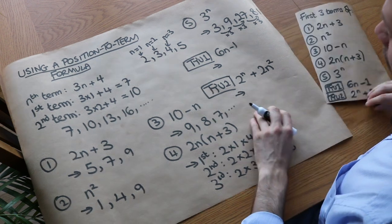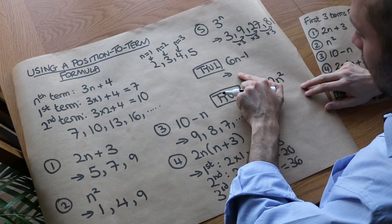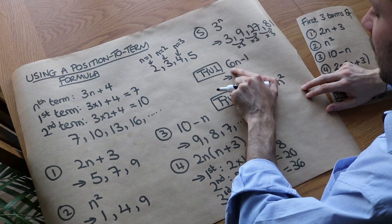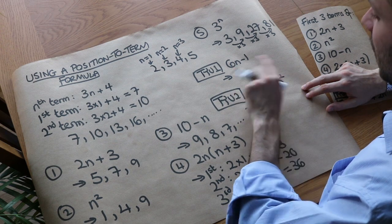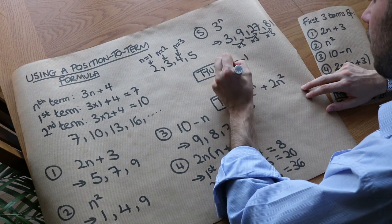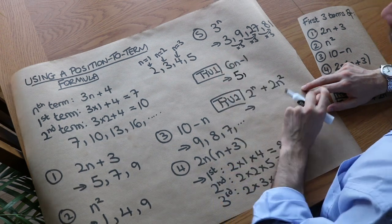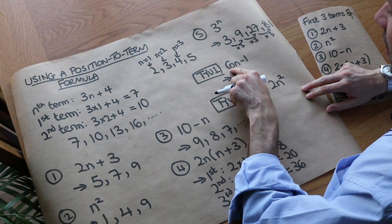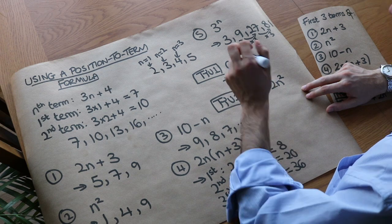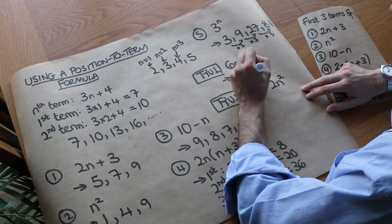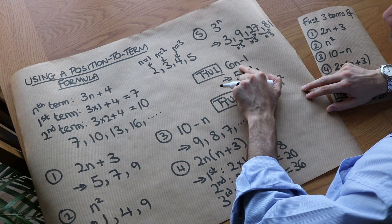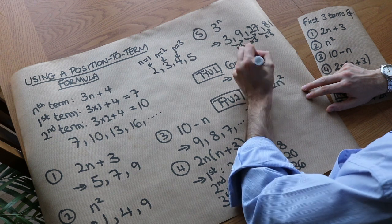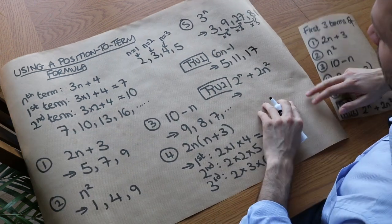Let's work through the first practice question: 6n minus 1. The first term: 6 times 1 minus 1 equals 5. The second term: 6 times 2 is 12, minus 1 is 11. The third term: 6 times 3 is 18, minus 1 is 17.